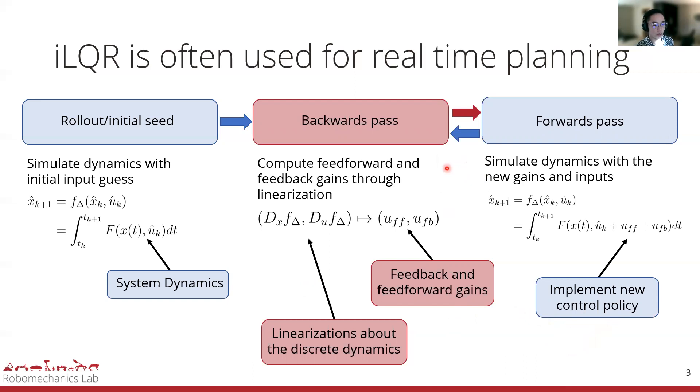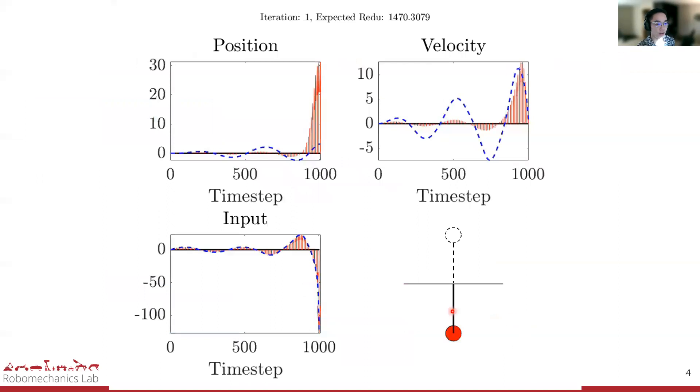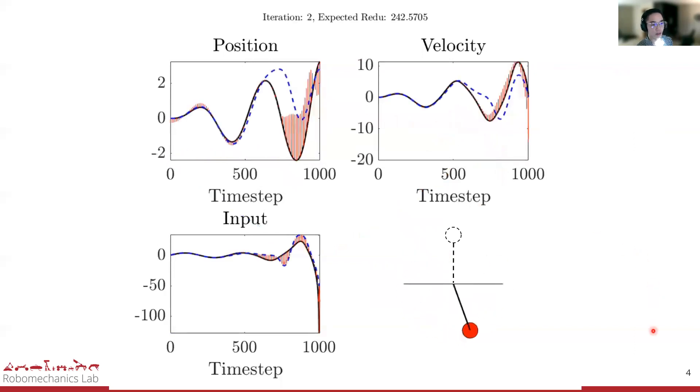To further illustrate the algorithm, I show an example trajectory generation for a pendulum swing-up. This animation shows the different components of iLQR in state space. The rollout is shown in black, the backwards pass computes the direction of improvement and creates a new control policy, and the forwards pass uses the new policy to improve. Again, the cycle is repeated until convergence.